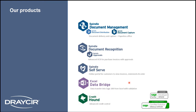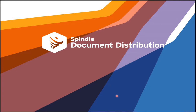We also have Spindle Self-Service — an online portal for customers and internal staff to view invoices, statements, and place orders. Sales people can use it on the road to place orders for customers. We have Excel Data Bridge, a validation tool for uploading sheets into Sage 200 that tells you exactly what's wrong and how to fix it. Finally, Credit Hound is our advanced credit control system with an automated chasing process, going beyond Sage 200's standard aged debtors report.